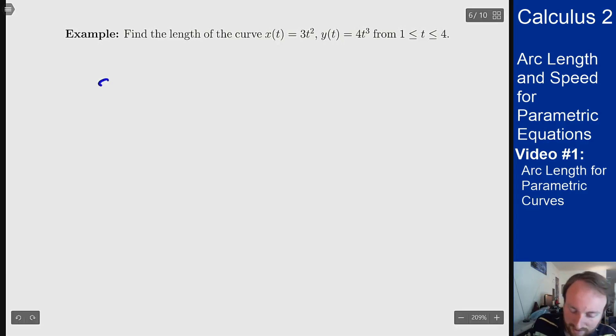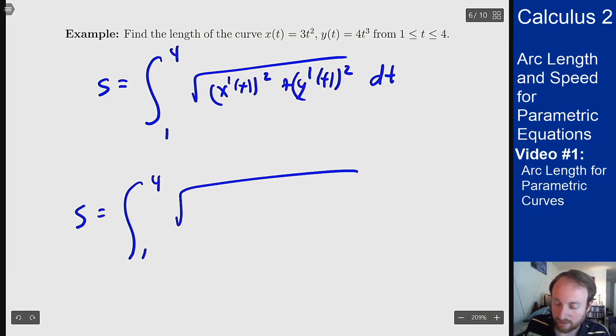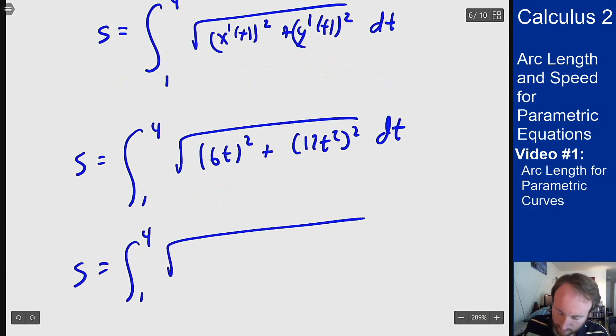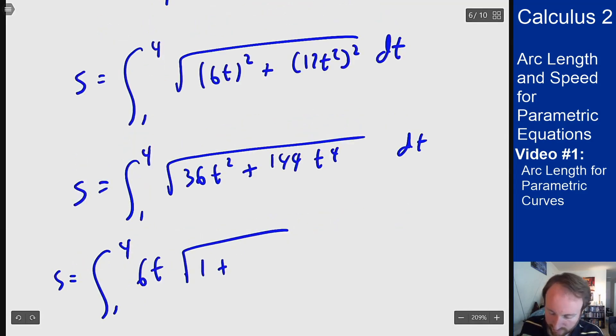So our calculation here says that the arc length should be the integral from 1 to 4, square root of x prime of t squared plus y prime of t squared dt. Now I can just plug these things in. This should be the integral from 1 to 4, square root of x prime is then 6t so 6t squared, y prime is 12t squared squared. I can then solve this out a little bit, 36t squared plus 144t to the fourth. I can then factor a 36t squared out of each term and move that outside of the square root as a 6t and what's left inside is a 1 plus 4t squared.